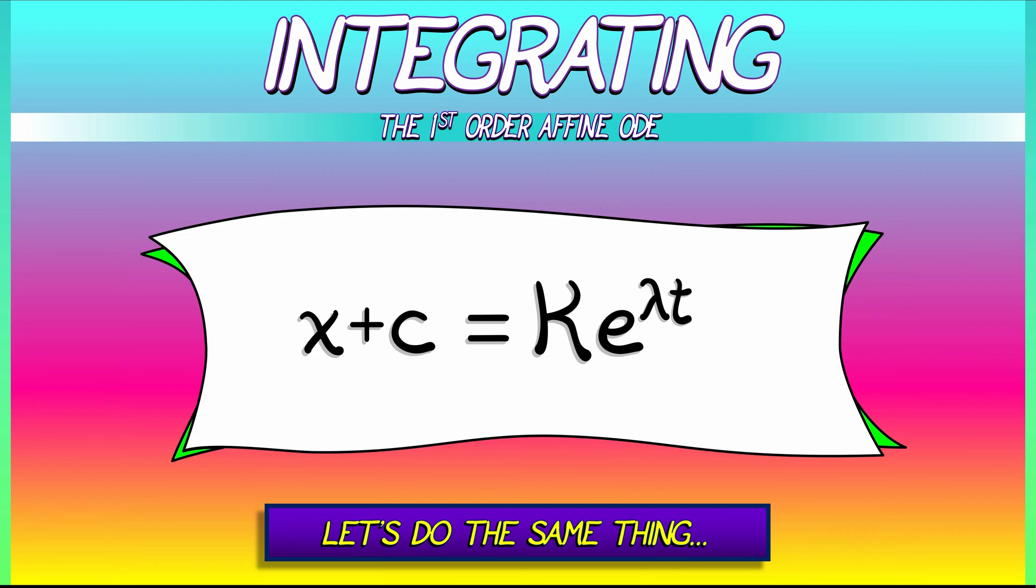Now, what is that constant of integration capital K? That is obtainable by looking at the initial condition. Plug in t equals zero. On the left, we get the initial condition in x, x naught plus little c.